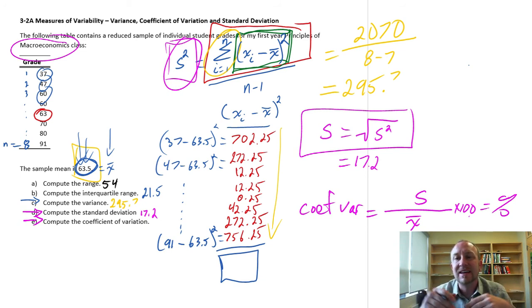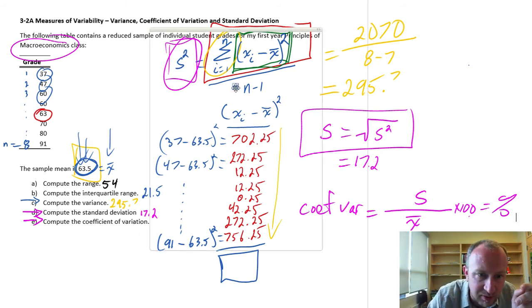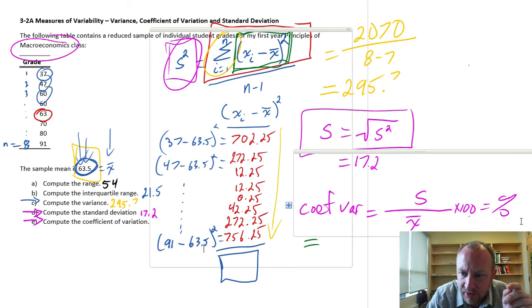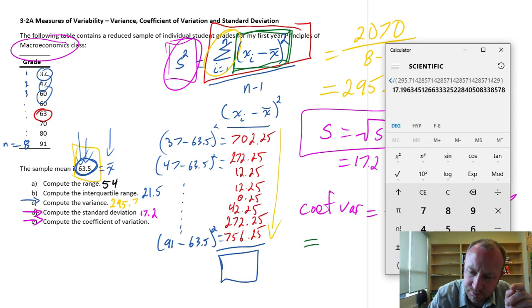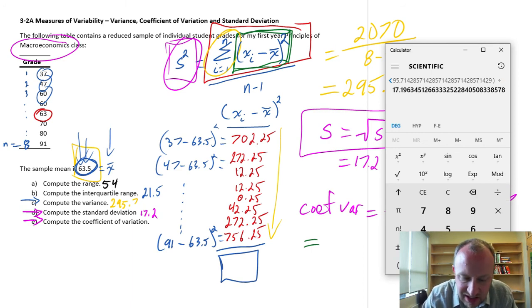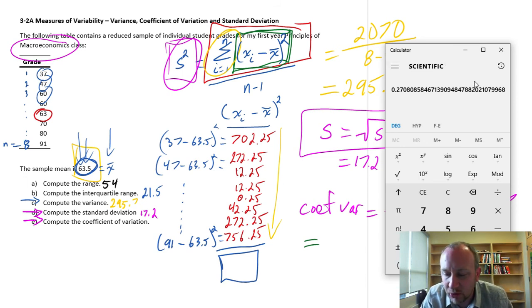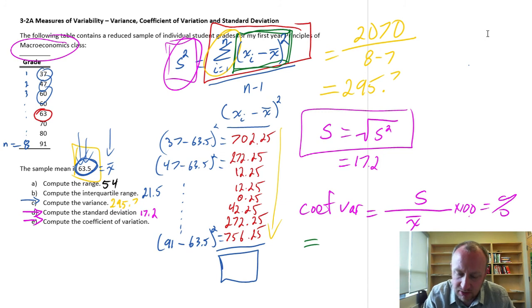So, the coefficient of variation tells us the standard deviation as a percent of the mean. So, in this exercise, with the data that we've been working with, my coefficient of variation will be 17.2. I'm leaving that calculation in the calculator. That was my standard deviation, about 17.2. Divide that by my mean, which we have is 63.5. And that gives me a coefficient of variation of 0.27 times 100. And that will be 27%. So, my standard deviation is 27% of my mean.